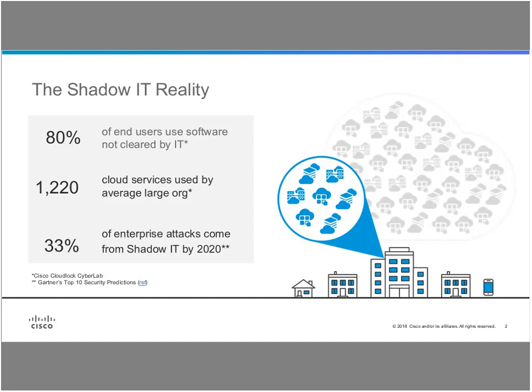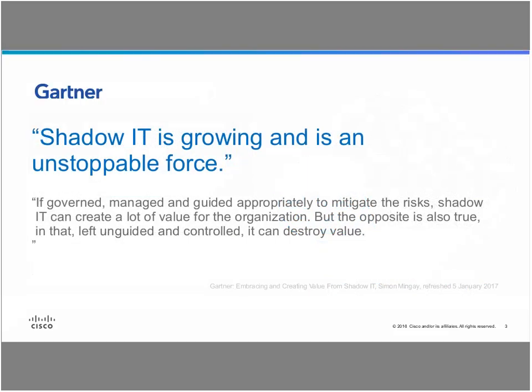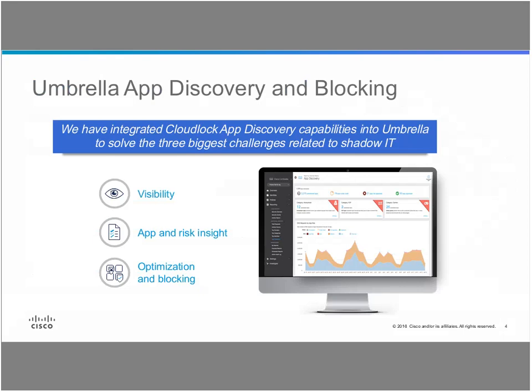There's a quote from Gartner that talks about the fact that shadow IT is now accepted as something you don't want to stop completely. There are positive outcomes when employees are empowered to adopt services that increase productivity. You can't really stop it completely, but you do want to guide and manage it so that it's beneficial to the organization — and that's exactly what we're trying to do with the app discovery capability and subsequent blocking.